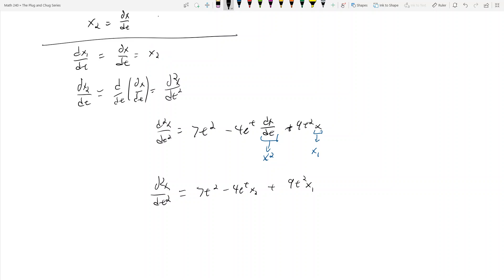And so this is d squared x dt squared. So as a system now I have my two equations. I have dx1 dt equals x2 from here, and now dx2 dt equals this guy. It's equal to 7t squared minus 4e to the t x2 plus 9t squared x1.